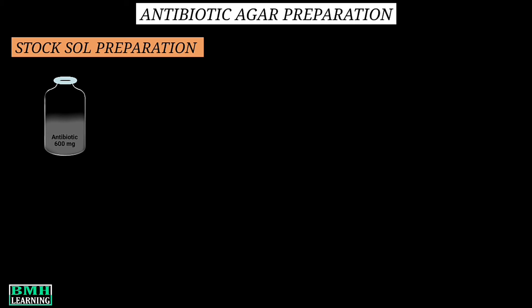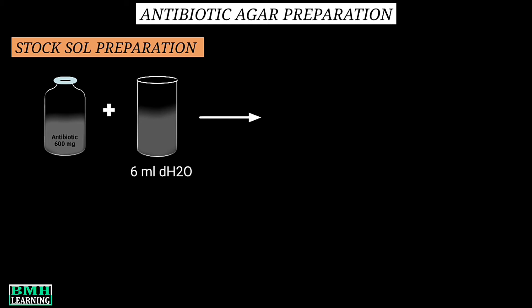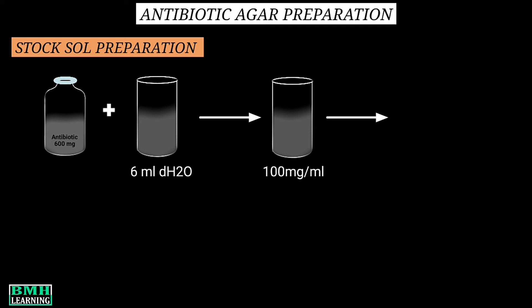Now let's understand it practically — antibiotic agar preparation. We start with preparation of the stock solution. The choice of antibiotic depends on the type of microorganism you want to test against. It is usually available as 600 mg per bottle. The 600 mg antibiotic is diluted with 6 ml of water to make a stock solution with a concentration of 100 mg per ml. From this stock solution, we take 1 ml and transfer it into another tube.